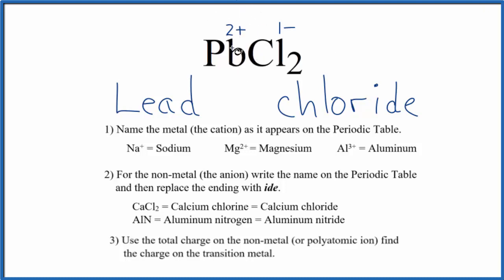So because we have this 2 plus on the Pb, we write a Roman numeral 2 between the lead and the chloride. And the name for PbCl2 is lead 2 chloride.